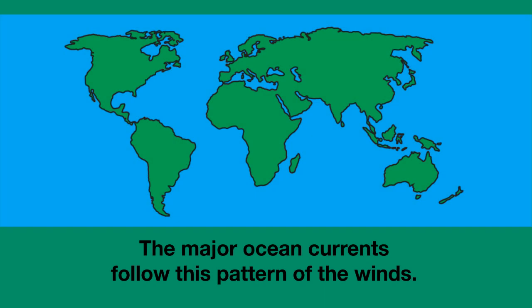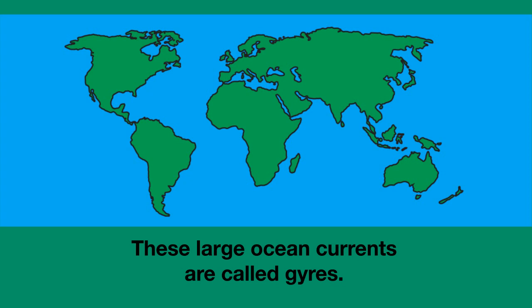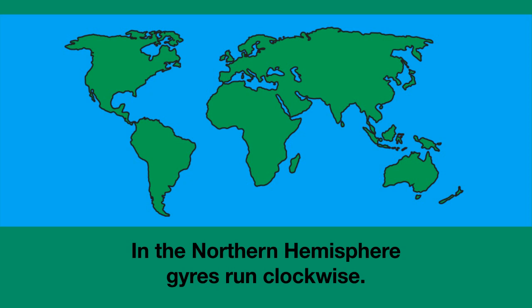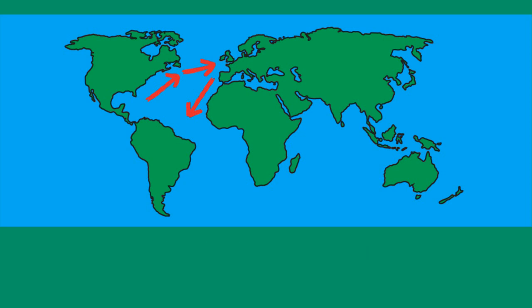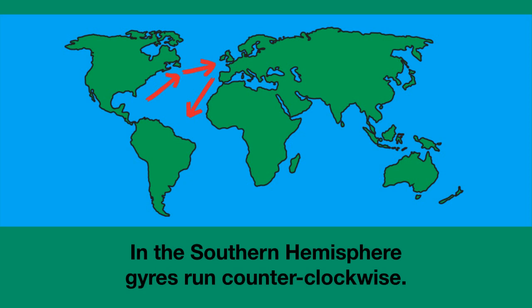The major ocean currents follow this pattern of the winds. These large ocean currents are called gyres. In the Northern Hemisphere, gyres run clockwise. For example, from south to north along the east coast of North America, west to east across the Atlantic, and north to south along the west coast of Europe and North Africa. In the Southern Hemisphere, gyres run counterclockwise.